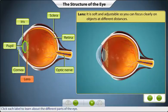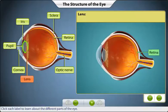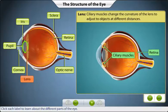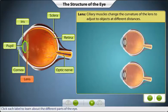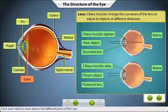The eye has a soft, transparent, curved lens located just behind the iris and pupil. Its curvature causes light to bend as it travels through the lens, helping to focus the light on the retina. Ciliary muscles change the curvature of the lens, allowing the eye to make adjustments for near and distant objects. This adjustment of the lens is known as accommodation.